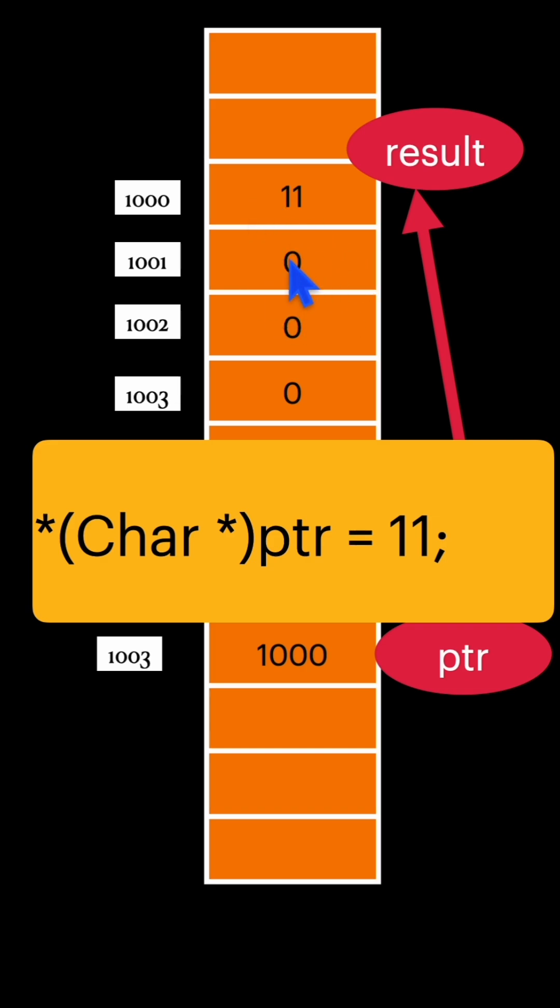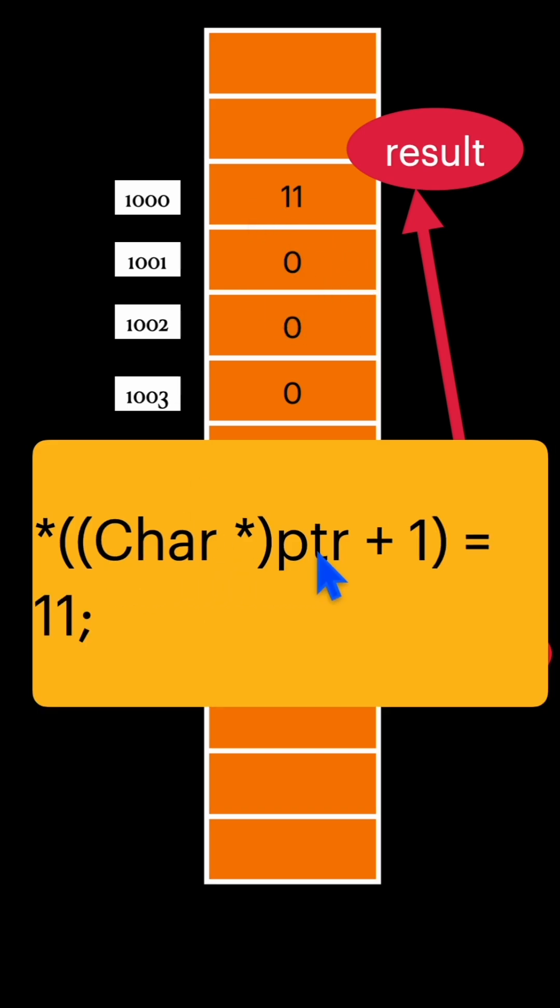And if you want to change the second byte here, you can simply increment this character pointer by 1 and then you change the value over here. So now it will change the second byte here.